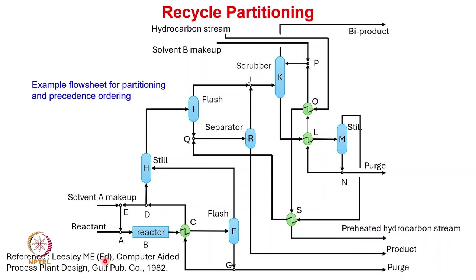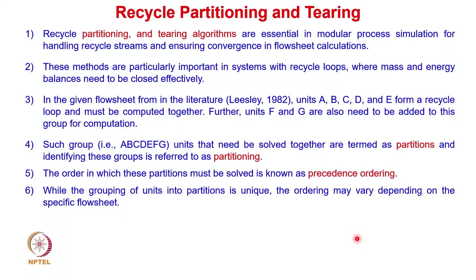Let us look at a slightly more complicated flow sheet given by Leslie Emi in his book Computer Aided Process Plant Design. In this flow sheet, identifying recycle streams by visual inspection alone is not possible — it is really difficult. Similarly, finding the tier streams and the calculation sequence for the modular approach is not straightforward with a complex flow sheet.